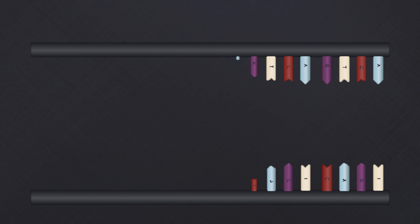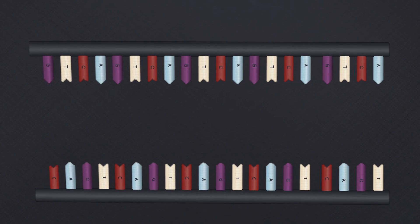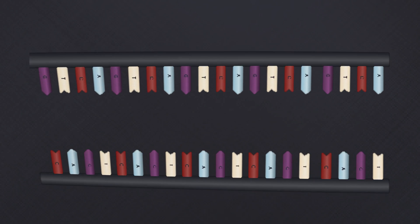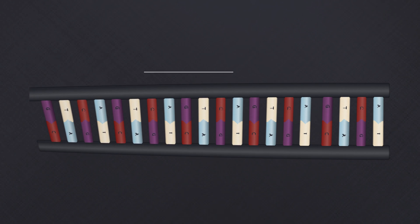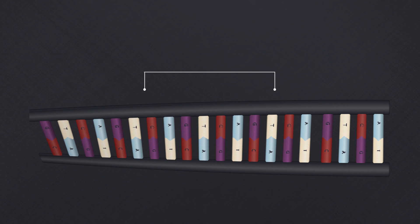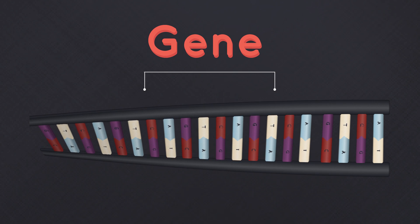DNA contains lots and lots of sequences. Some sections of these sequences have a specific genetic code for making particular proteins. And these special sections are called genes.